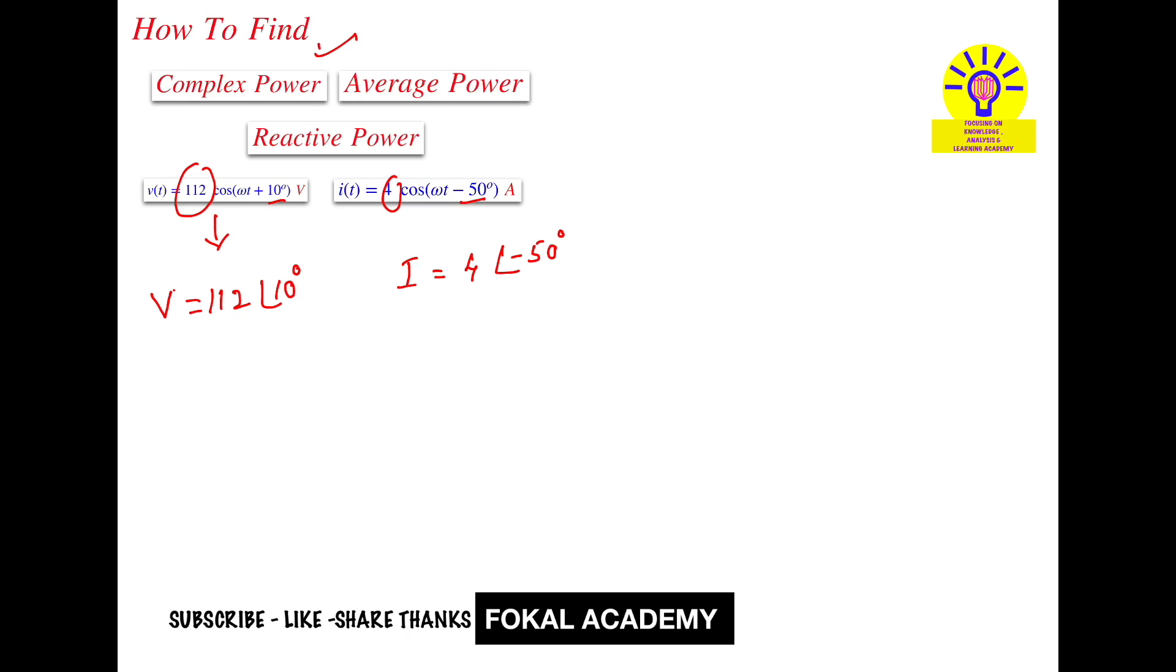Complex power S from voltage and current—these are not RMS voltage, not RMS current, these are just voltage signal and current signal which were given to the circuit. So from that, the complex power is half of voltage times current conjugate.